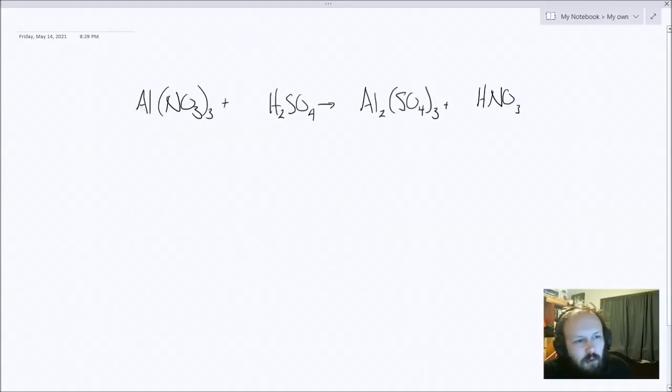Now I can see I have only one aluminum on the left and two on the right, so I definitely need a 2 in front of this compound.